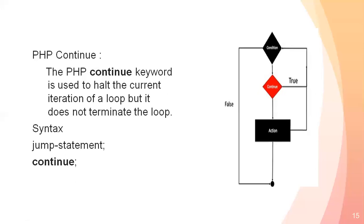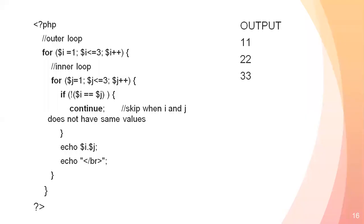Let's look at the example. I have written an outer for loop: $i equal to 1, $i less than or equal to 3, $i++. Inside, I have an inner for loop: $j equal to 1, $j less than or equal to 3, $j++. And the condition inside is: if $i equals $j, then continue — meaning when i and j have the same value, skip that iteration.